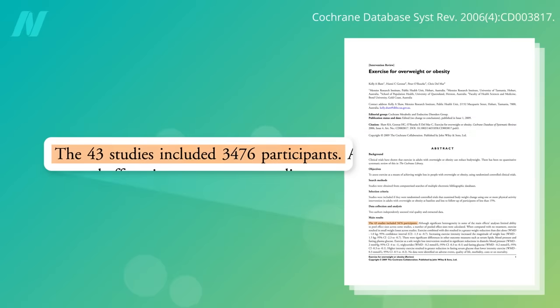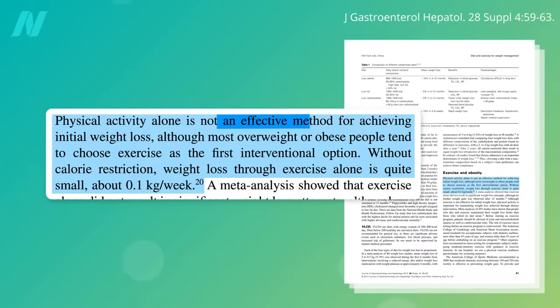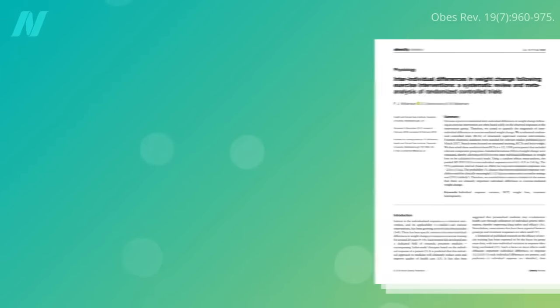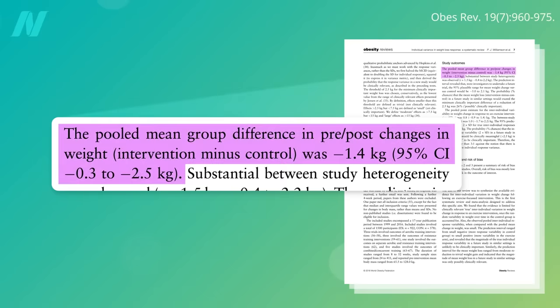Dozens of randomized controlled trials involving thousands of participants have been published on the effects of exercise on weight loss. Physical activity was not found to be an effective strategy. For example, if you look at the studies that tried using exercise alone to induce weight loss, over an average of about 5 months, people only lost about 3 pounds. When you put all the studies together, it looks like it took around 6 weeks of exercising to get people to lose a single pound.